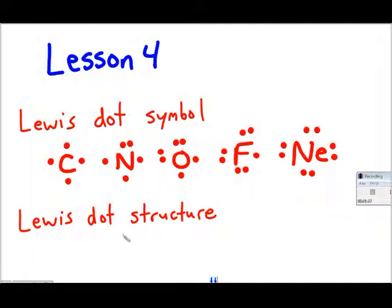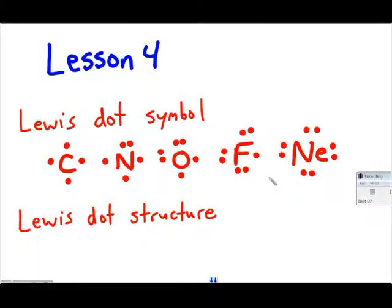Lewis dot structures are where we combine these symbols and show where all the valence electrons are in a whole molecule. Instead of drawing lines like we did in structural formulas, in Lewis dot structures we draw dots. Let's see how this is done.